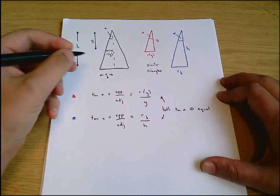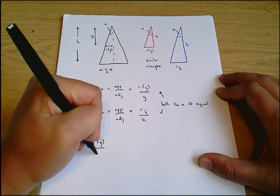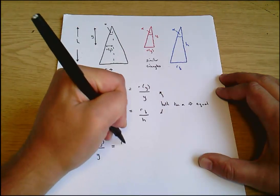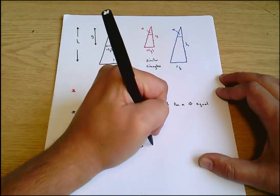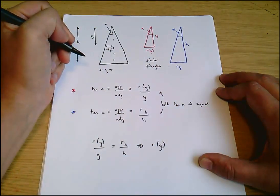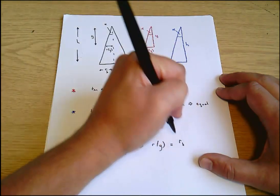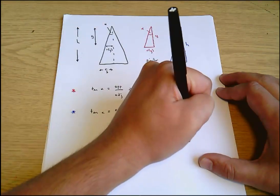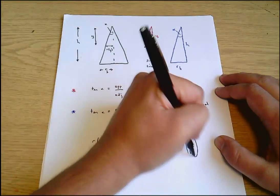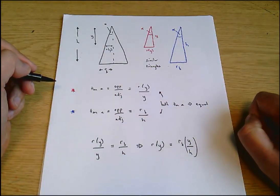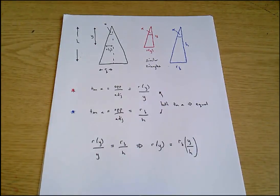And these two things must then be equal because they're both tan alpha. And that turns out to be useful because now I can say r of y divided by y equals r b divided by h. And that means that r of y, the radius at any height y, equals r b times y over h. This is useful. I'm just going to make a note of that as a kind of useful sub-conclusion. I'll underline it.